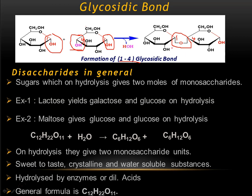This is only one example of a glycosidic bond. A glycosidic bond can be formed as an alpha 1-4 glycosidic linkage, a 1-6 glycosidic linkage, or a 1-2 glycosidic linkage. They may be alpha or beta — if the sugar is in alpha configuration it is called an alpha glycosidic linkage; if in beta configuration, it is called a beta glycosidic linkage. In this example it is an alpha 1-4 glycosidic linkage.